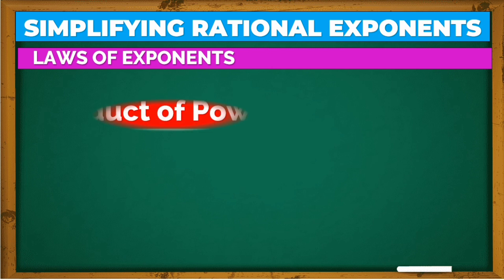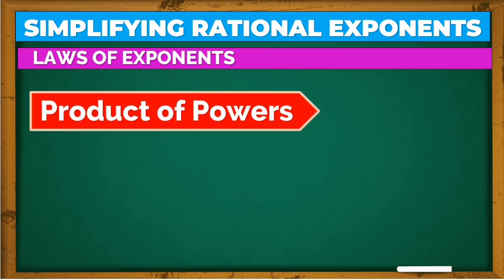The first law is the product of powers. When we multiply the same bases, we just add their exponents. As you can see, we just add their exponents. Again, this only works if they have the same base.